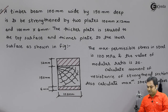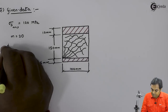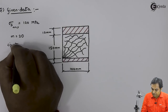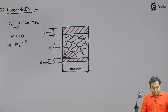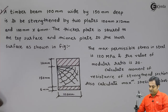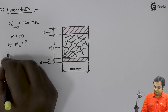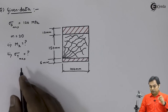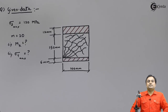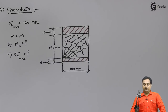We have to calculate: first, the moment of resistance of the strengthened section — that is M_r — and second, the maximum stress in timber. These are the two questions we need to solve.